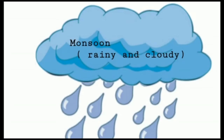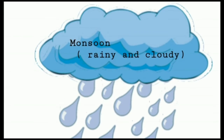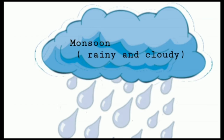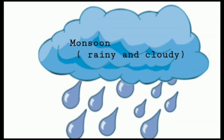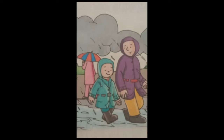The second season is monsoon — rainy and cloudy. Monsoon brings rain, so we use an umbrella or wear a raincoat and gum boots when we go out. They protect us from the rain. Sometimes we see a rainbow in the sky on a rainy day.